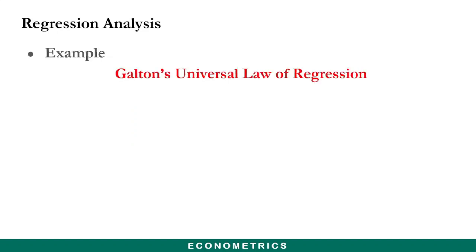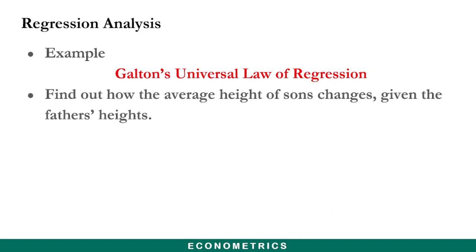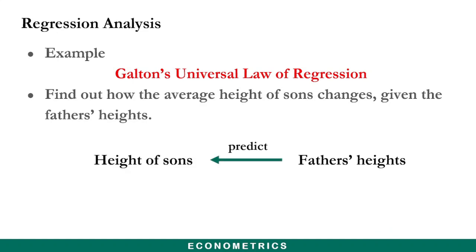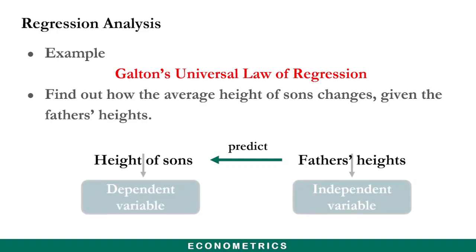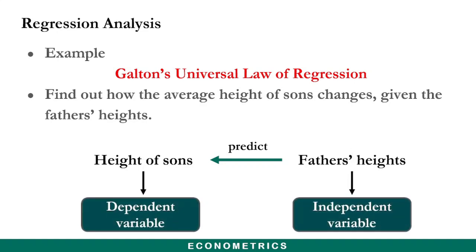We can exemplify regression analysis using Galton's universal law of regression, where Frank Galton was interested in finding out how the average height of sons changes given the father's height. In this case, Galton uses the known values of the father's height in order to predict the average height of sons. Therefore, the height of sons becomes the dependent variable while the father's height becomes the independent variable.